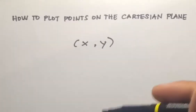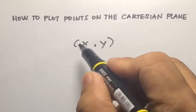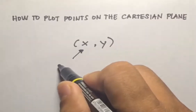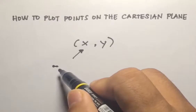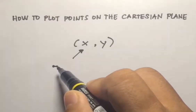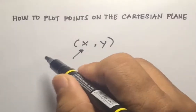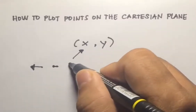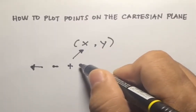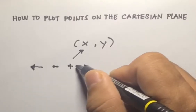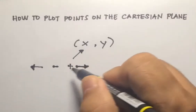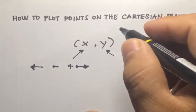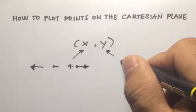When plotting a point, we look at the abscissa first. If the abscissa is negative, you move starting from 0 towards the left, towards the negative side. If X is positive, then from 0 you move towards the right. This movement is along the X-axis.